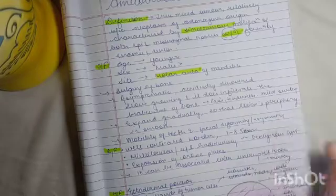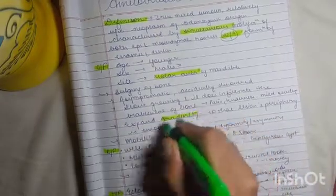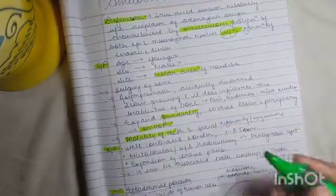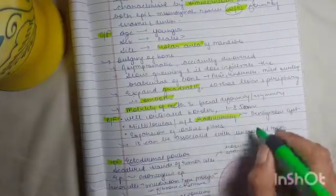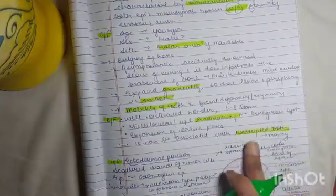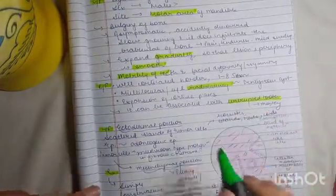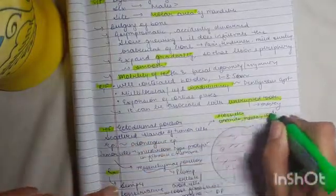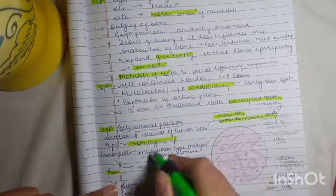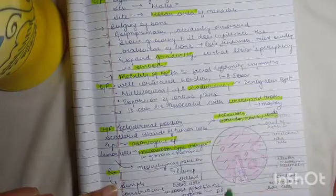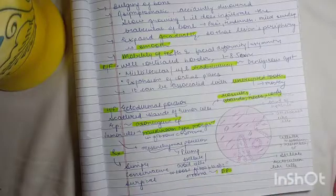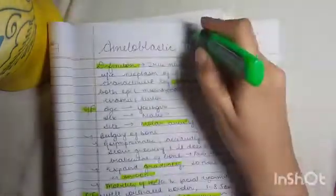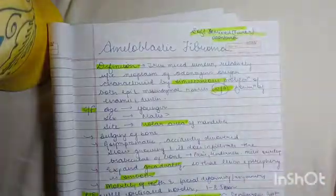It expands gradually with smooth borders. Radiographically, it has a well-corticated border, is multilocular and radiolucent, and is usually associated with an unerupted tooth. Histologically, the ectodermal portion shows rosettes, strands, and nests resembling odontogenic epithelium with mushroom-type proliferation. The mesenchymal portion shows plump cells resembling dental papilla. Treatment is conservative or surgical.